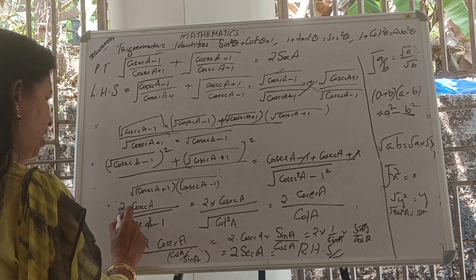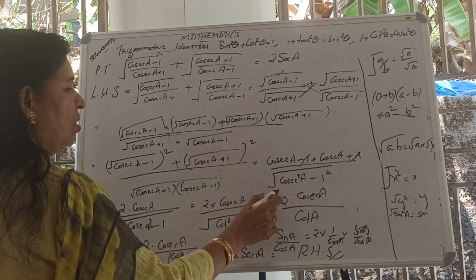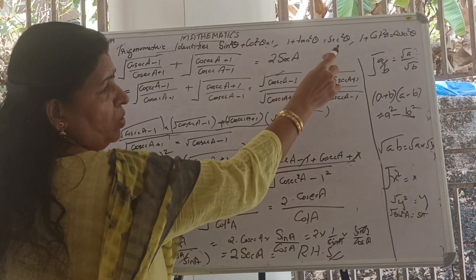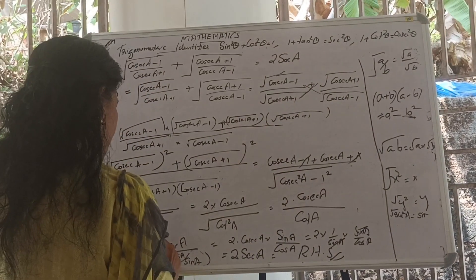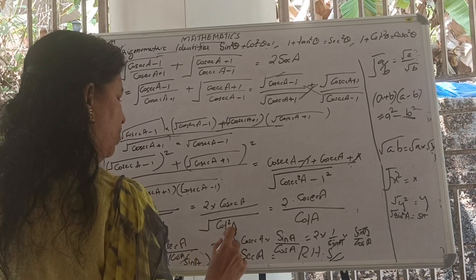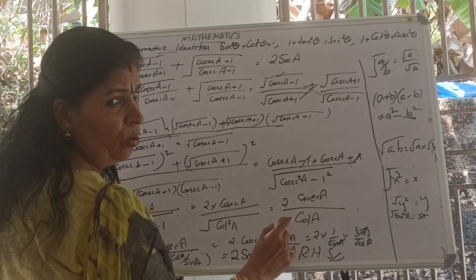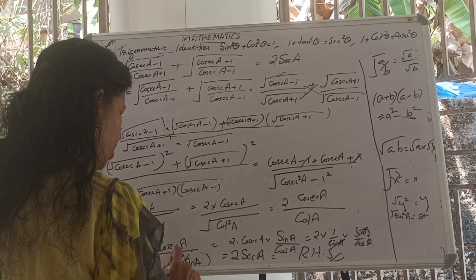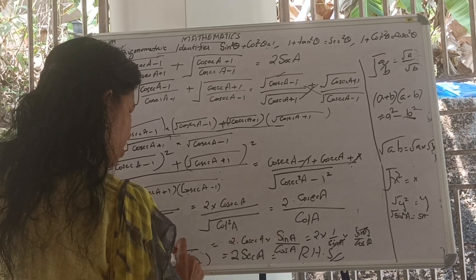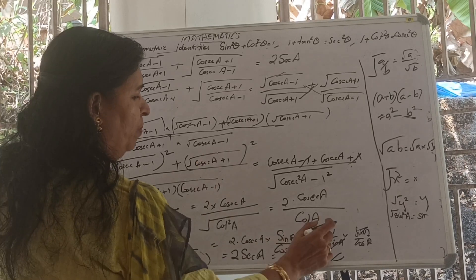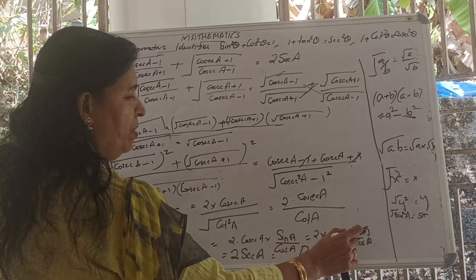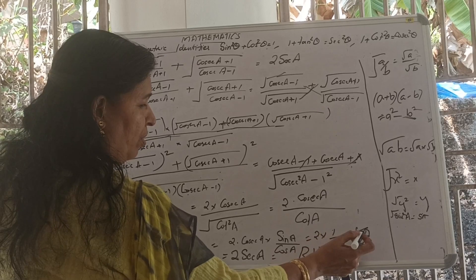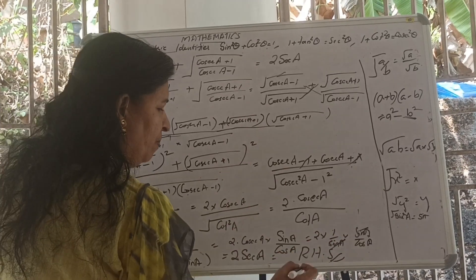Cancelling the square root and square in the numerator, the first term becomes cosec A minus 1 and the second cosec A plus 1. Cancelling minus 1 and plus 1, numerator becomes 2 cosec A. From the identity, cosec squared A minus 1 equals cot squared A, so the denominator is cot A, which is cos A by sin A. Thus 2 cosec A divided by cot A gives 2 into (1 by sin A) into (sin A by cos A), which equals 2 by cos A, that is 2 sec A — that is the RHS. Proved.